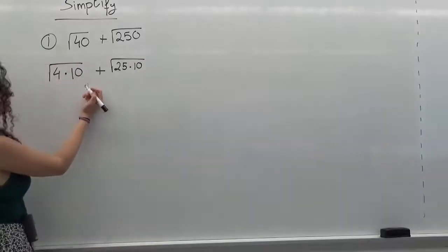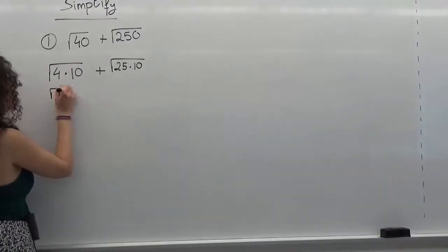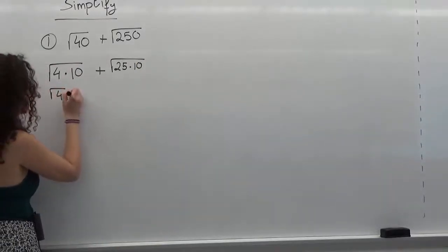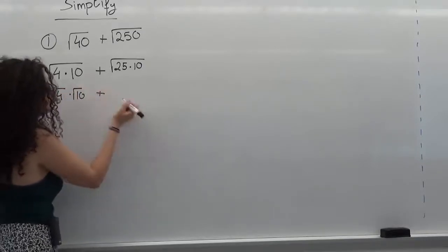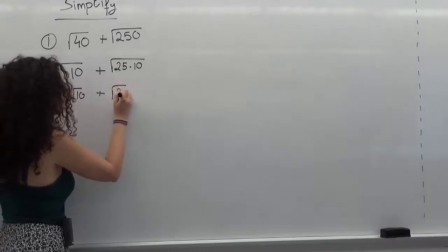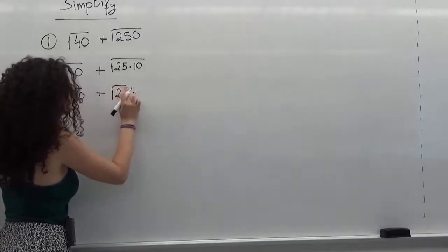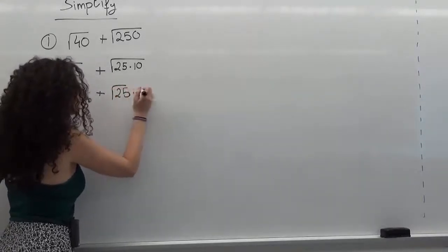I can rewrite this more easily and I can write it as radical of 4 times radical of 10 plus radical of 25 times radical of 10.